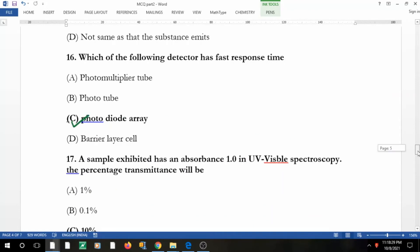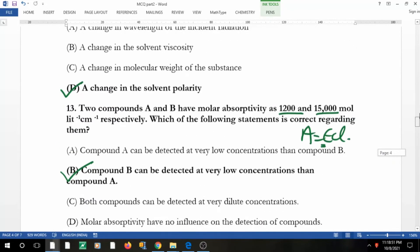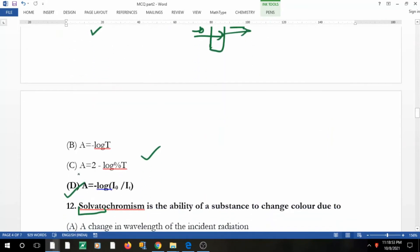Which detector has fast response time? Yes, definitely photodiode array. A sample exhibited has an absorbance one in UV spectroscopy. The percentage transmittance will be: absorbance is equal to minus log T, or in fact 2 minus percentage log T. If you remember, in terms of percentage, A is equal to 2 minus log percentage T. So just use this and you will get that.